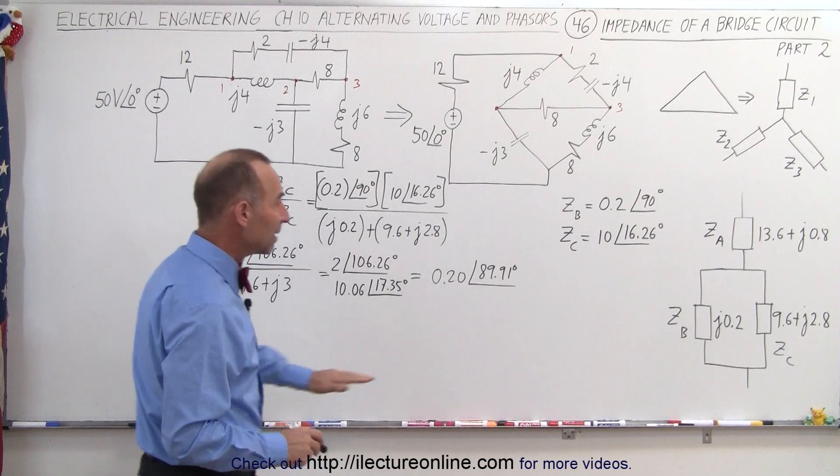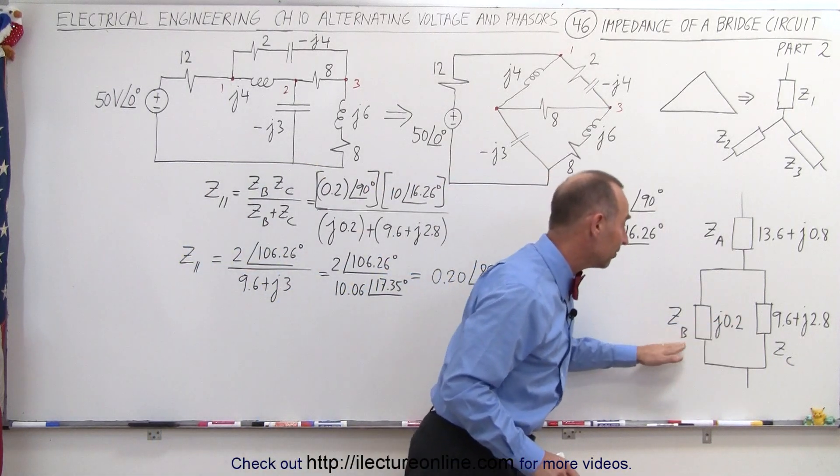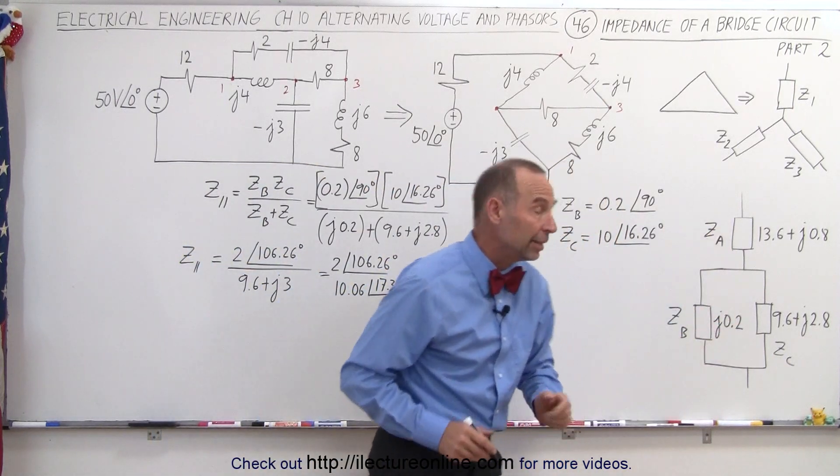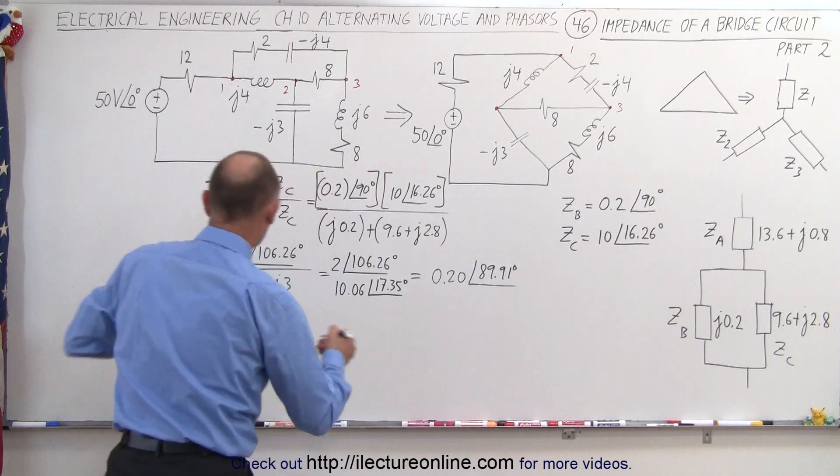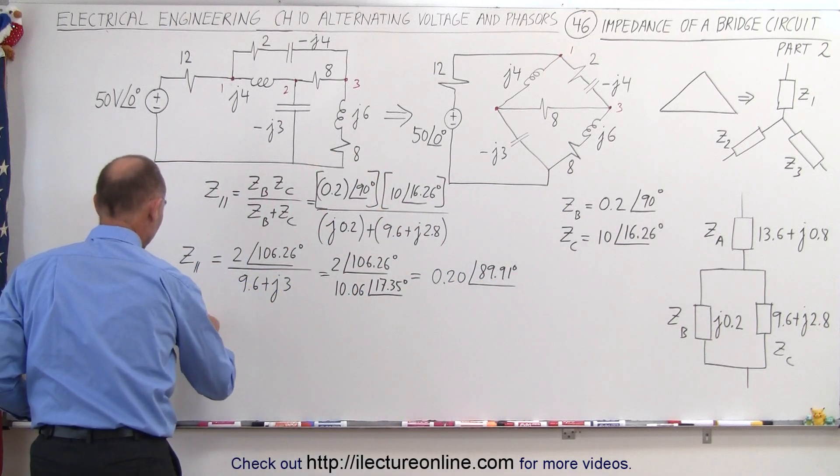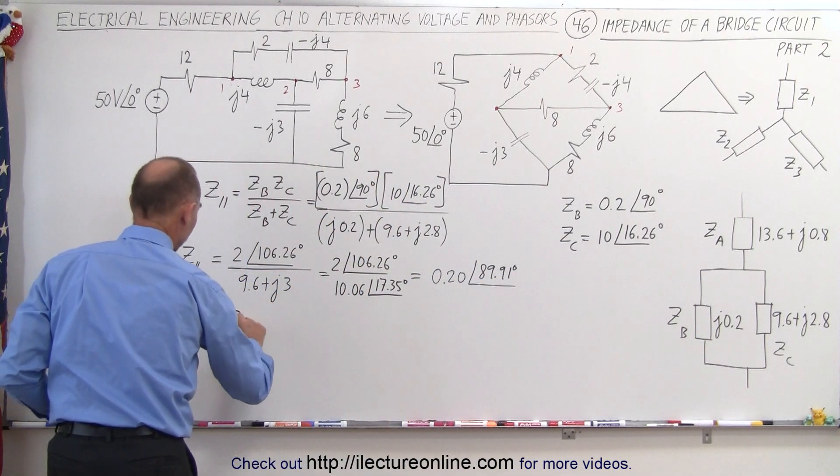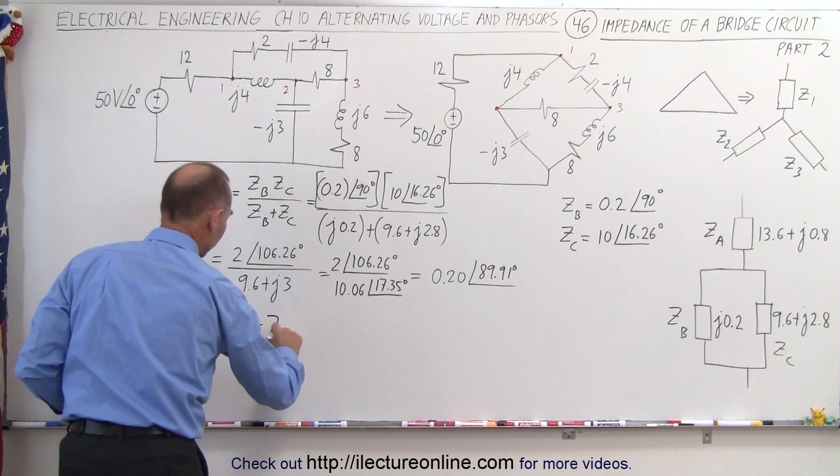So now that we have the parallel impedance of ZB and ZC, now we need to add that in series with ZA. So, now we get the total impedance, Z total, is equal to Z parallel plus ZA.